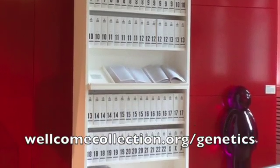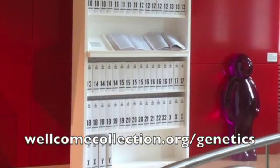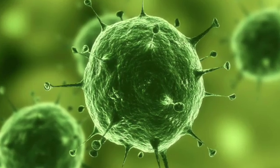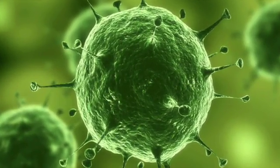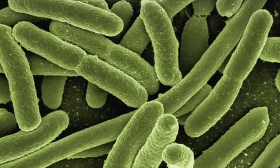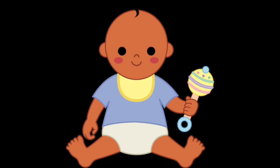You can see it in London at the Wellcome Centre. Our bodies have many different types of cells that differ because some genes are switched on and some are switched off in each cell. Some genes are only switched on during development of a baby, and after birth their job has been completed and they're switched off.